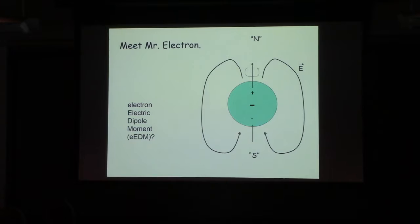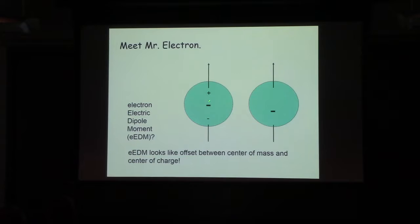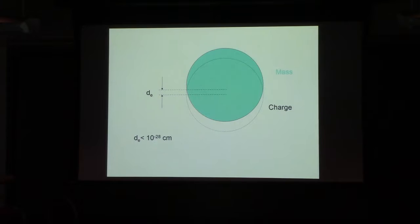We can think of this electric dipole moment as just being that the center of charge is not exactly in the same place as the center of mass. Many people have tried to do this experiment. Every time they measure it, they try to measure the electric dipole moment, and they find that the center of charge and the center of mass are in the same place. And so far, the current limit says, if they're different from each other, it's less than this fantastically small distance, 10 to the minus 28 centimeters.